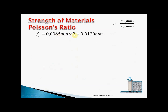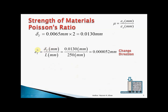To find the transverse deformation, we take the gap (0.0065 mm) multiplied by 2, giving 0.130 mm. Then we calculate transverse strain using the strain formula: transverse deformation divided by the transverse length (the diameter, 250 mm). This gives us the transverse strain, moving us from deformation to strain.